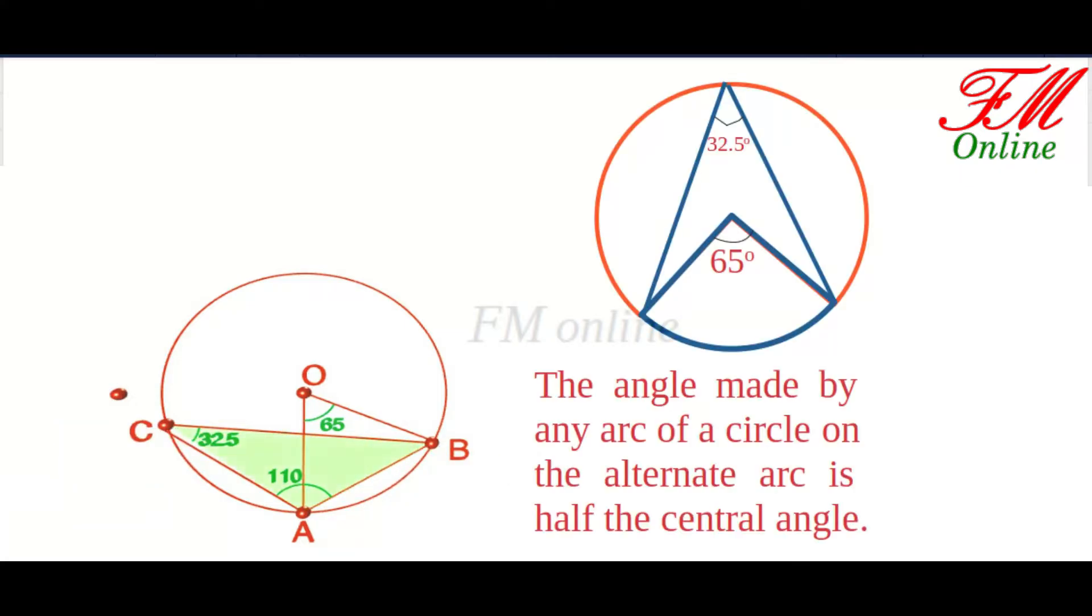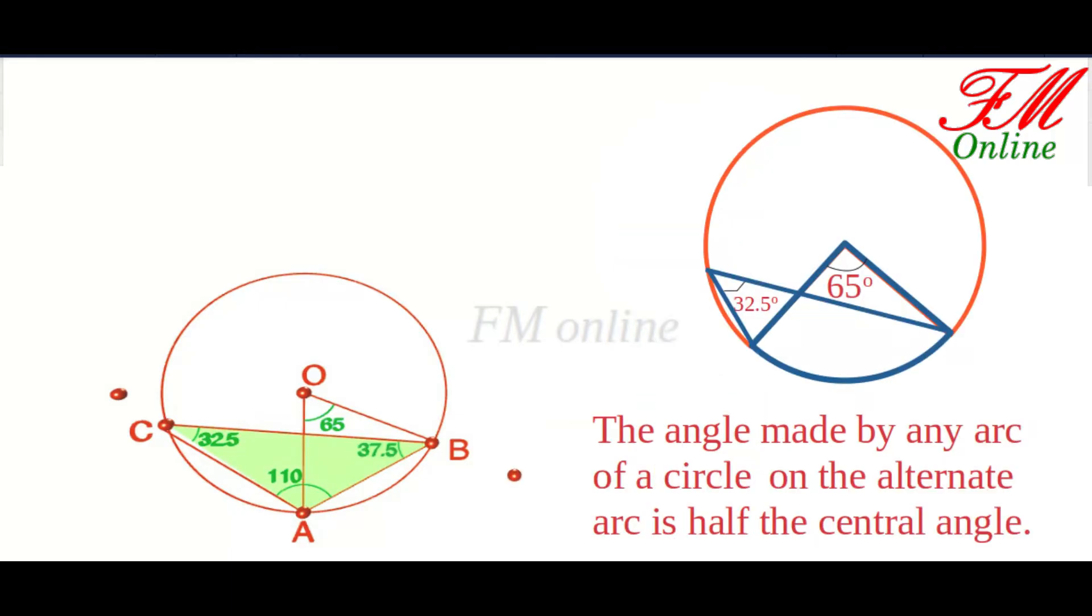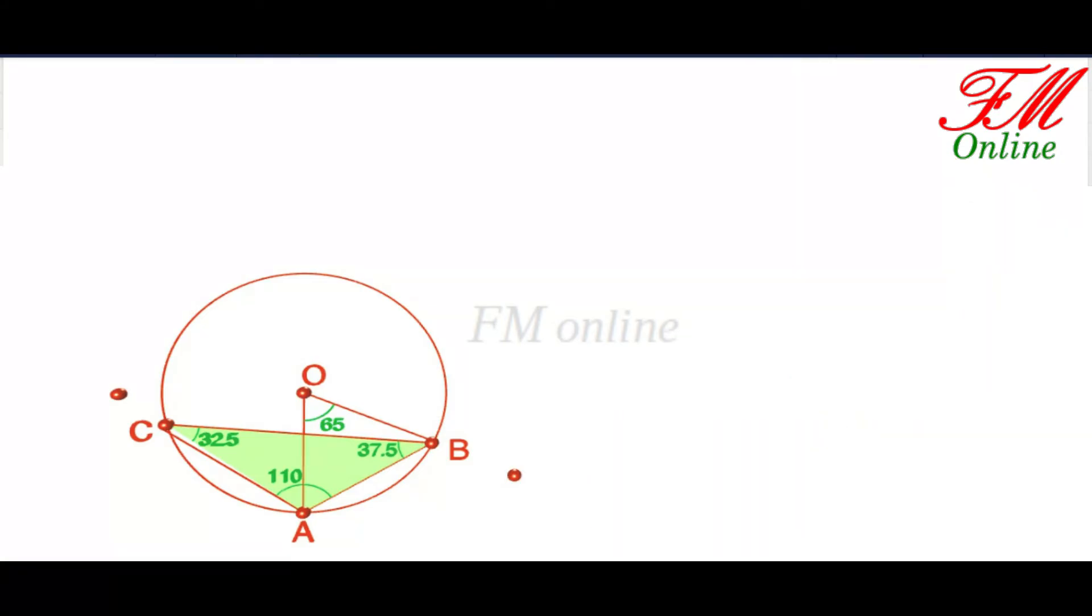Angle C is half of the central angle, that is half of 65 degrees, which is 32.5 degrees, and the third angle will be 37.5 degrees because the sum of angles of a triangle is 180.